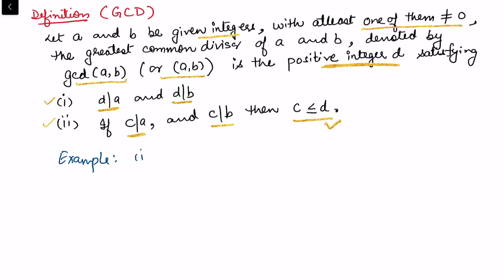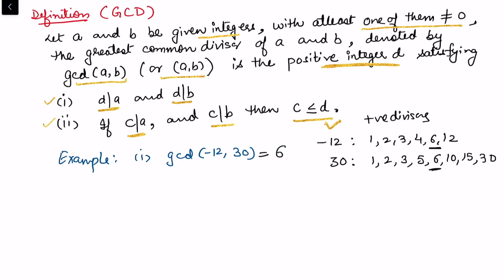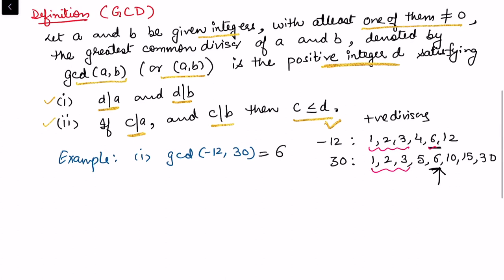Let us consider an example. We want to find the greatest common divisor of −12 and 30. To find the GCD, I first need to know the divisors of these numbers. Writing the positive divisors: for 12 these are 1, 2, 3, 4, 6, and 12; and for 30 the positive divisors are 1, 2, 3, 5, 6, 10, 15, and 30. Among the positive divisors, the common divisors are 1, 2, 3, and 6, and the greatest is 6. So gcd(−12, 30) = 6.